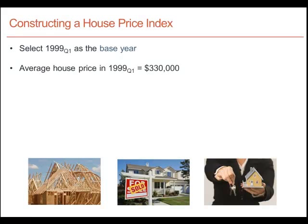We arbitrarily selected 1999 as the base year — we didn't have to choose the first year. We can choose any year we wish. We could have set the value of the index equal to 100 for any other year in the time series. For example, we could have used 2012 as the base and computed an index number for every year back to 1999. In that case, since prices were generally lower in earlier years, the index values would largely be below 100.